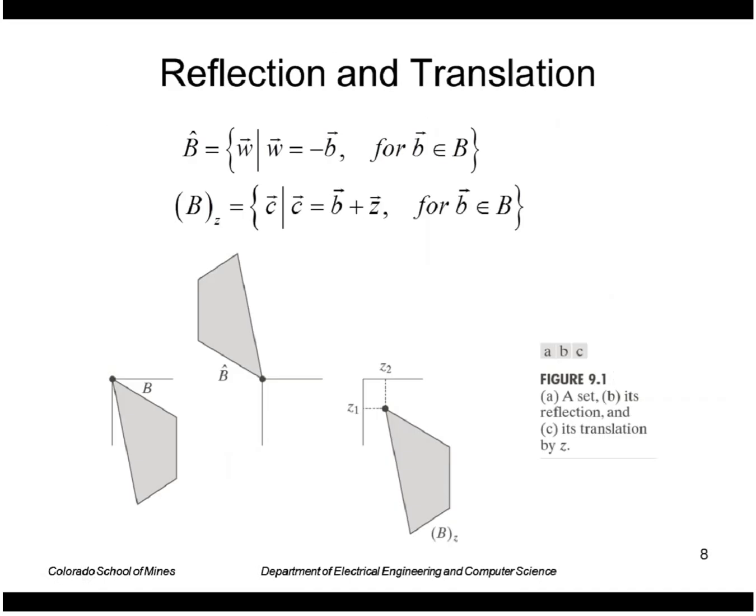Reflection of a set B, denoted by this up arrow, is elements w such that w is equal to minus b for some b as an element of the set B. Basically we are reflecting or negating these vectors, flipping it around the origin. If this is our set B, here's the origin, the reflected set is up here.